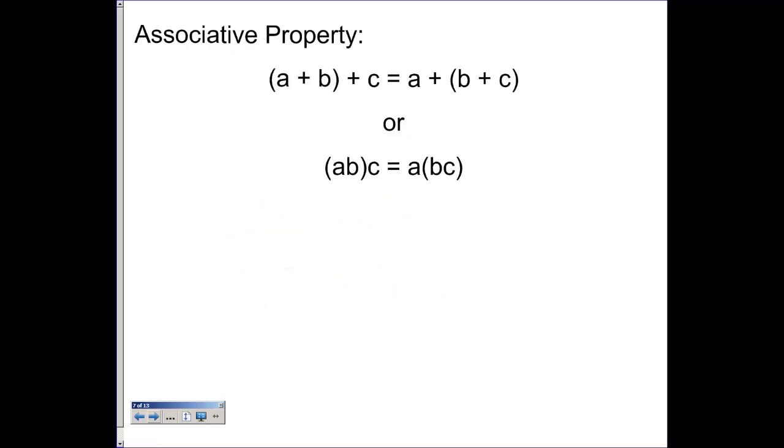Associative property just means you can group things differently. And quite often we will use the commutative and associative properties together. So if I have 2 plus 4 and then I add 5 to that, well, we know that that's going to give us 11.